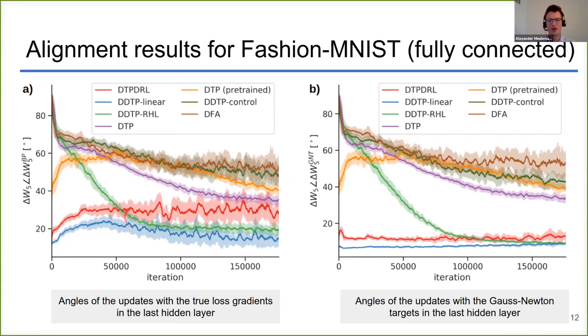Our three variants are the three lower curves, so all these variants use this new difference reconstruction loss. You see that alignment is much better than difference target propagation, which is here in purple, and other controls above it.